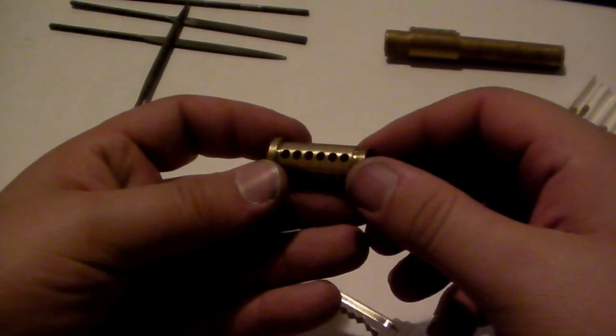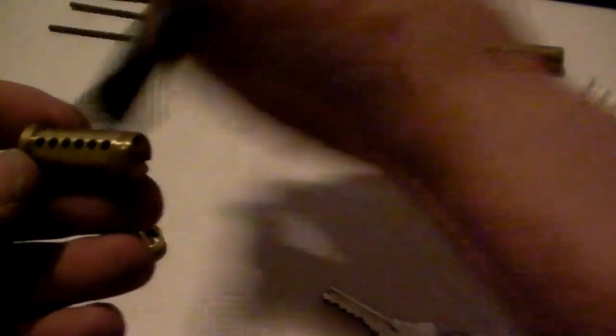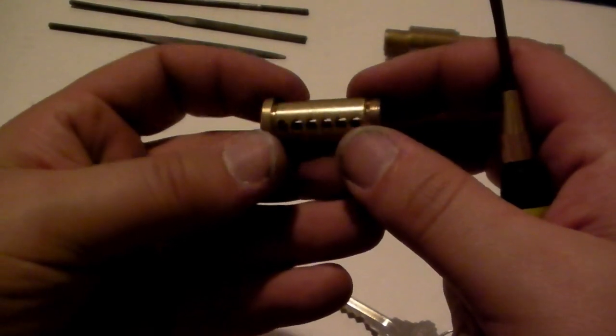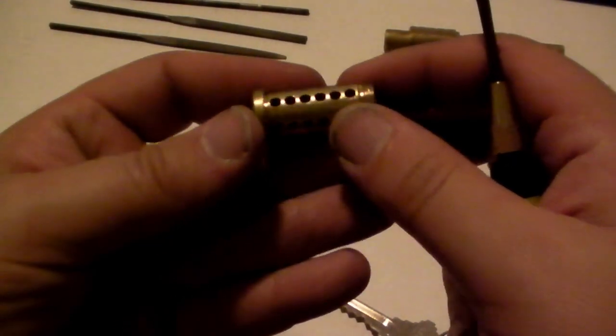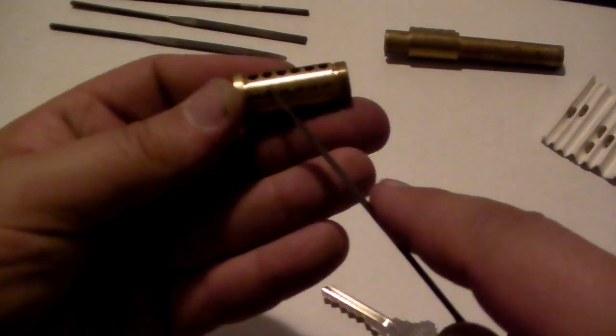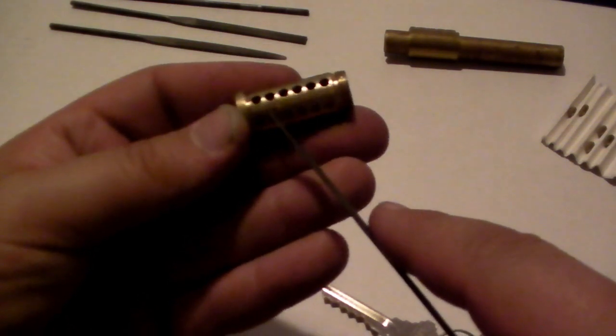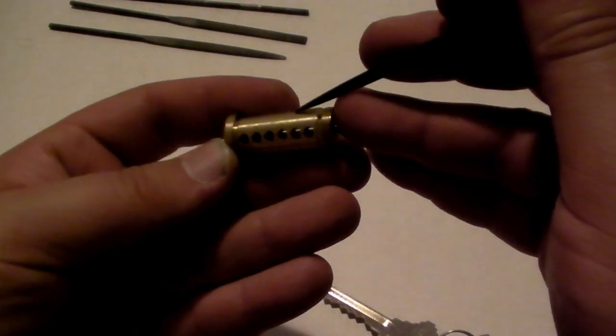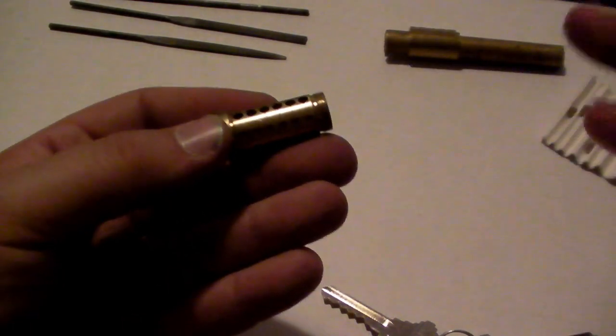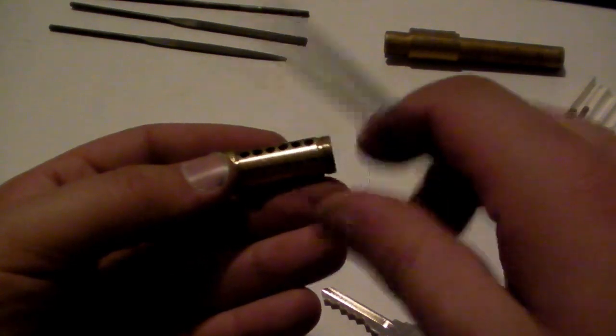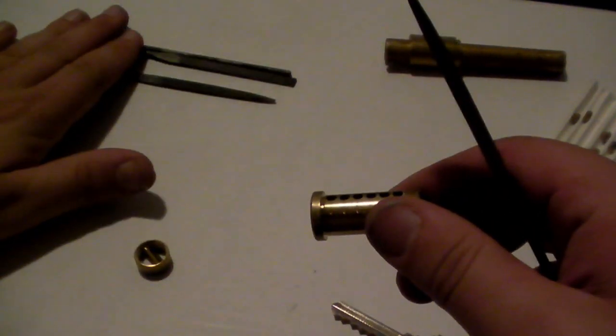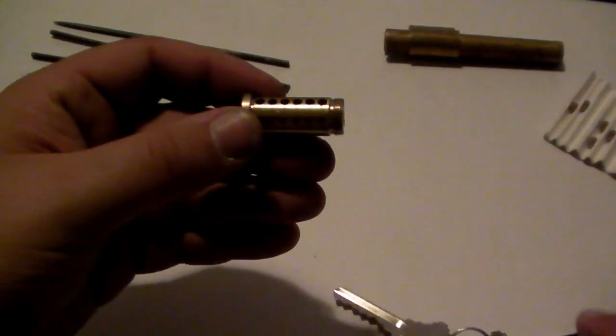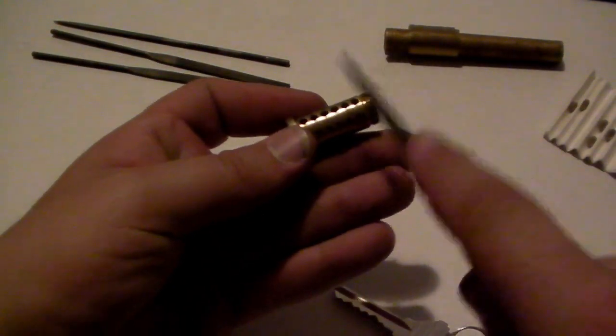Now, the whole point of this modification is that we want one key to close the lock and another key to open the lock. To do that, we're going to remove a little bit of material right along here and a little bit of material on the opposite side. I'll just use a little half-round file to get started, and I have a few other files that I'm going to use. I want it to be a nice open chamber.